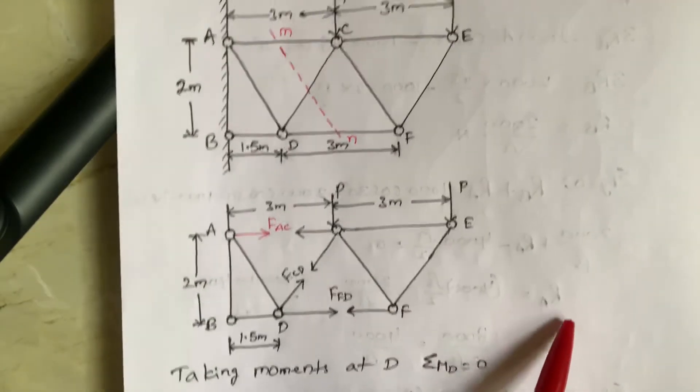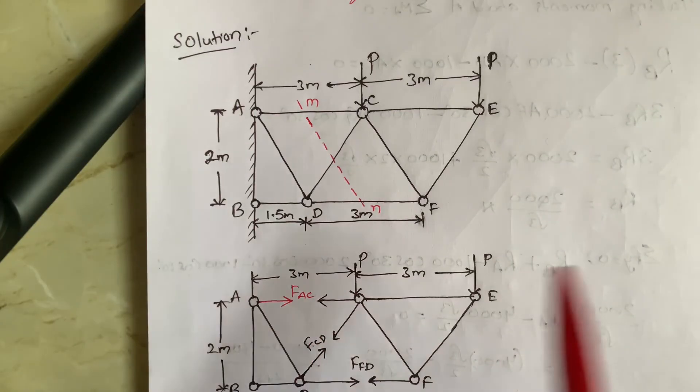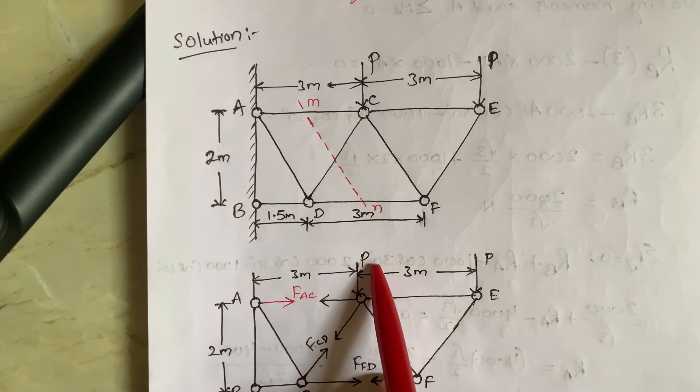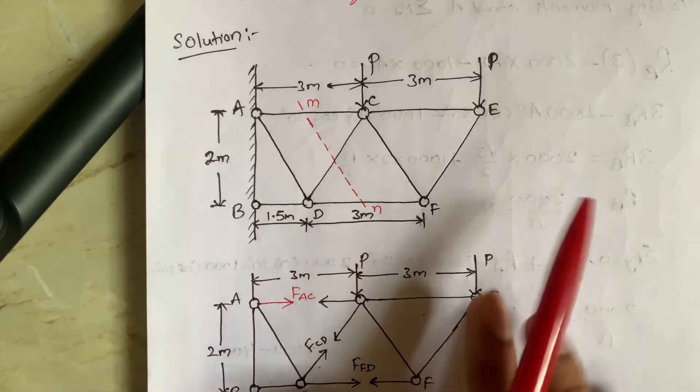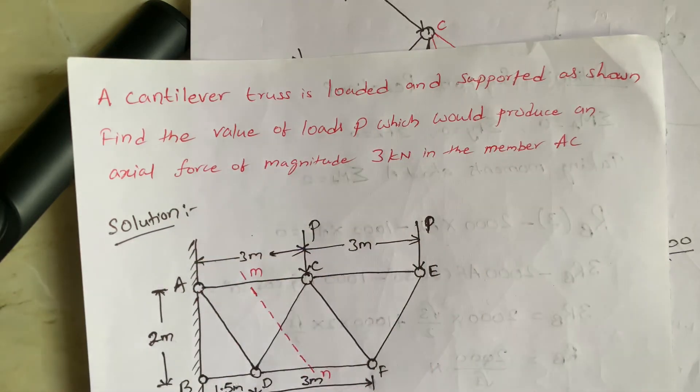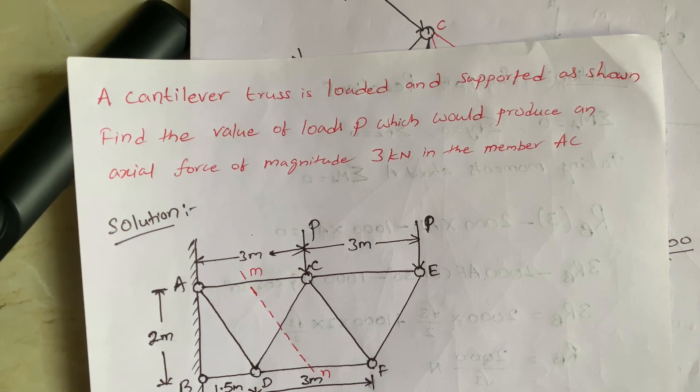Now, we got the values FAC as 3P and P value is 1kN. Like that, we are going to solve this cantilever truss as loaded and supported. I hope you understood this. Thank you so much. Thanks for watching. Bye.